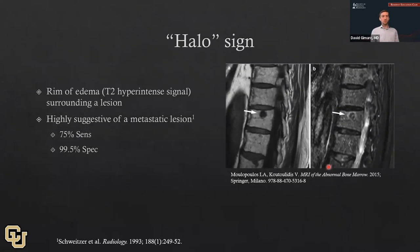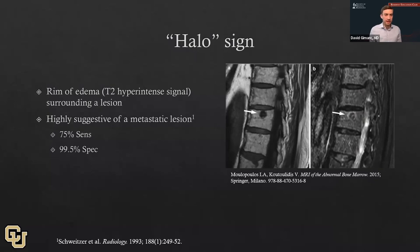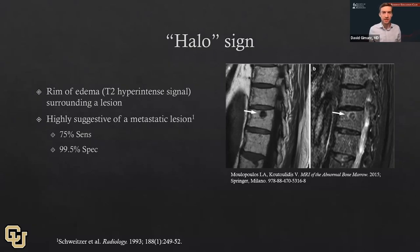The halo sign: this refers to lesions that are both T1 and T2 hypointense but on T2 imaging have a thin peripheral rim of edema around them. Dr. Schweitzer's paper showed this has about a 99% specificity for a metastatic lesion. The algorithm calls this out in bullet point number one: halo signs, even though they're T1 and T2 dark, are very suspicious for metastatic disease.